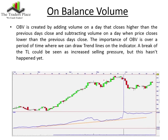This is one of the volume indicators I watch most often: on balance volume. The indicator is created by adding volume to the indicator on a day that closes higher than the previous day's close, and we subtract volume from the indicator on a day when price closes lower than the previous day's close. So it's all based on closes — higher closes, we add volume; lower close, we subtract volume, and the indicator goes up and down. The importance of on balance volume is actually over a period of time where we can draw things like trend lines. A break of the trend line can be seen as increased selling pressure in this counter.